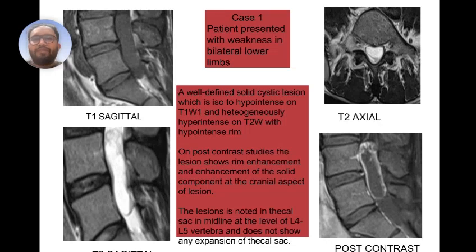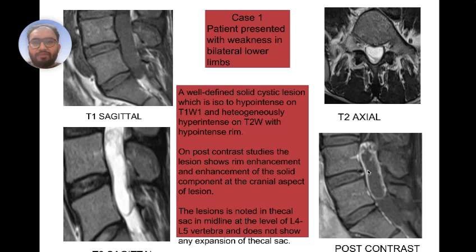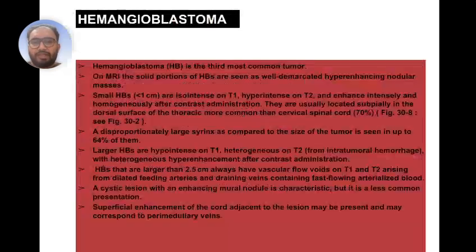Case 1: Patient presented with weakness in bilateral lower limbs. A well-defined solid cystic lesion is seen, which is iso- to hypo-intense on T1-weighted images and hyper-intense on T2-weighted images. On post-contrast study, the lesion shows rim enhancement and enhancement of the solid component at the cranial aspect. The lesion is at the thecal sac in the midline at L4–L5 vertebral level and does not show any expansion in the thecal sac.